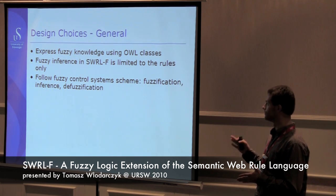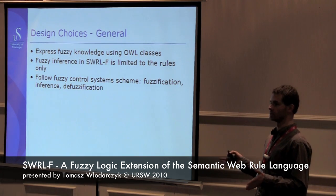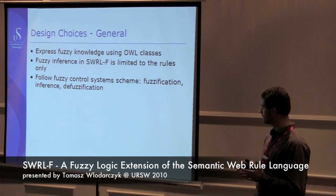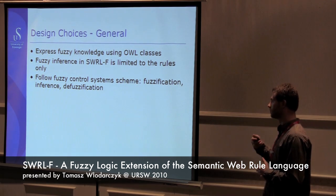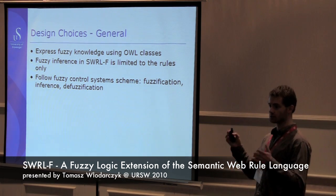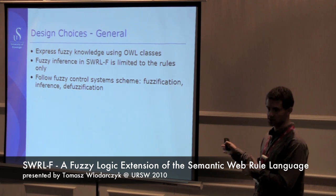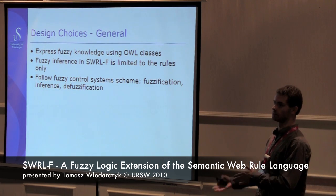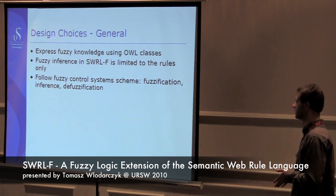We limit the fuzzy inference just to rules, because this allows us to go around some of the complications that would result if we also wanted fuzzy inference directly in the ontology itself. The way we achieve it is by using the fuzzy control system scheme: we take the crisp description about fuzzy classes from those OWL classes, we fuzzify, we perform fuzzy inference in the rules, and we then defuzzify the results and assert the crisp knowledge back to the ontology.